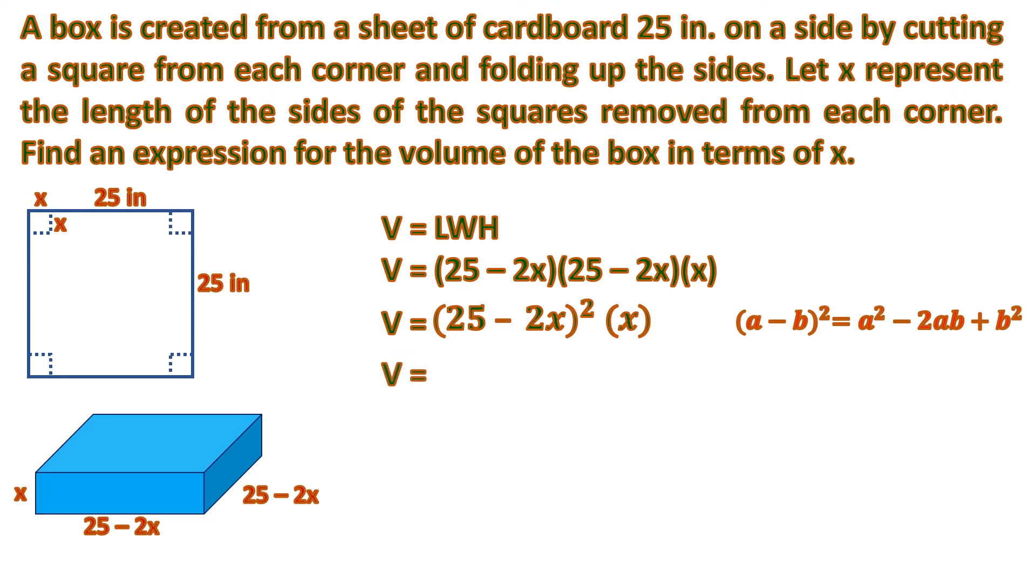Remember that the square of a minus b is a squared minus 2ab plus b squared. So the square of 25 where our a is 25 and our b is 2x, minus 2 times 25 times 2x plus the square of 2x, all will be multiplied by the height x.